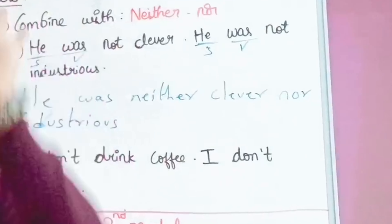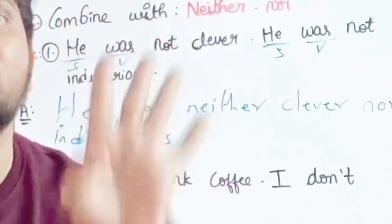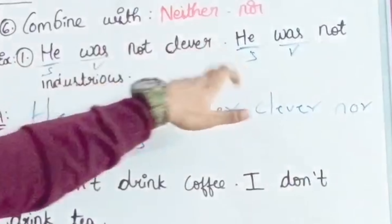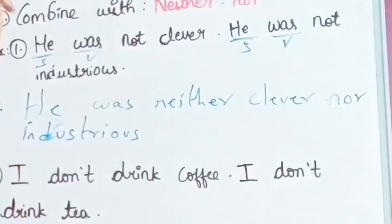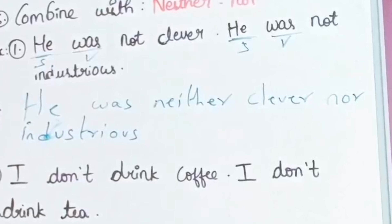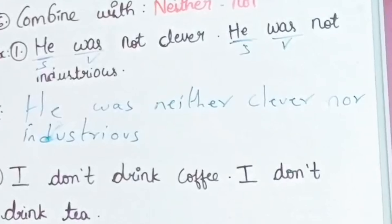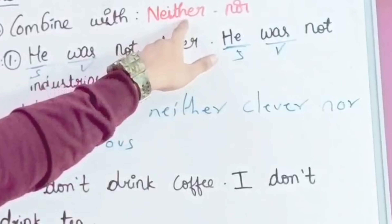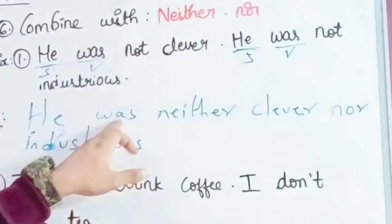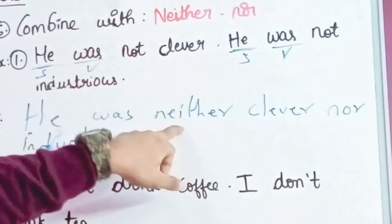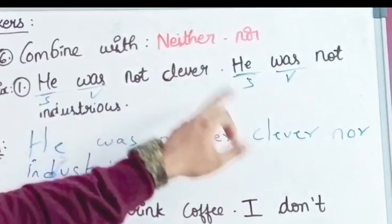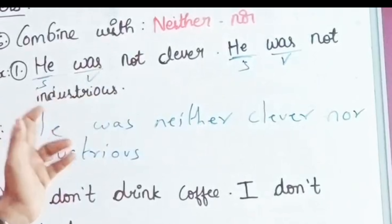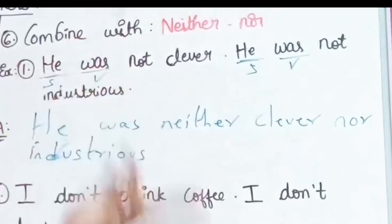First subject is one, second subject is one. The first sentence has subject, and the second sentence has subject. There is no other verb needed — the verb 'was' carries through. Neither is negative, so the verb is positive in form. He was neither clever nor industrious. Clear?